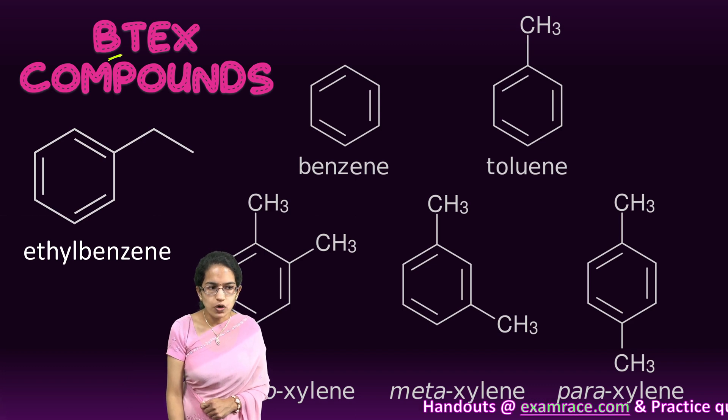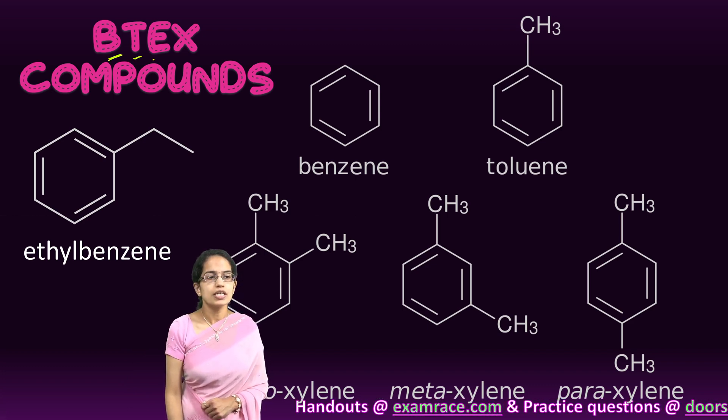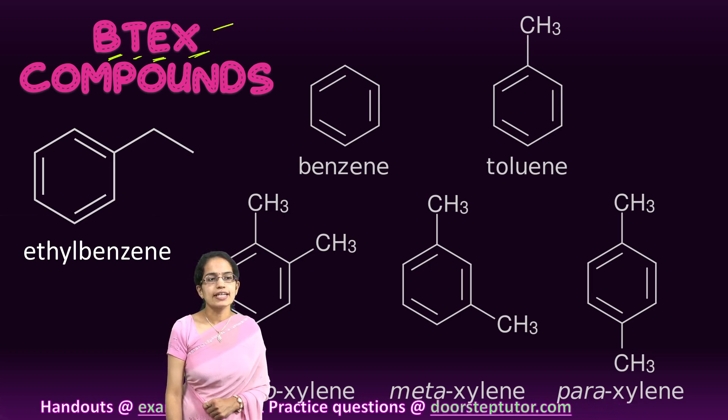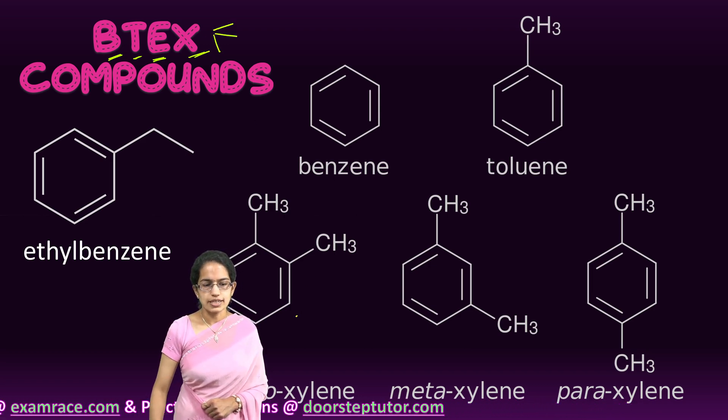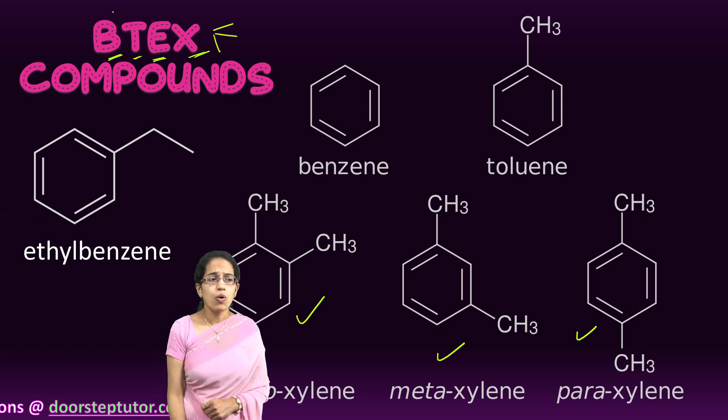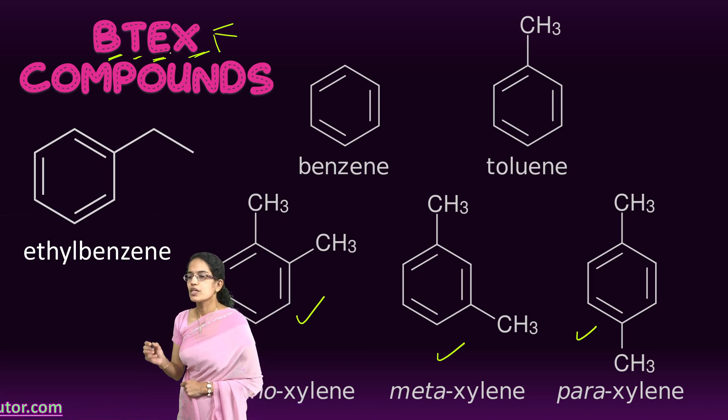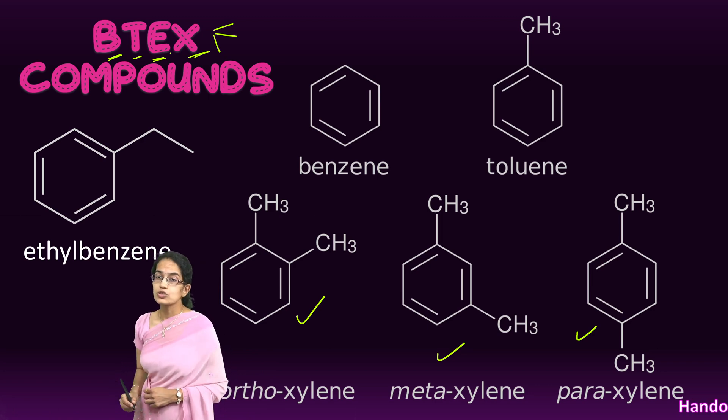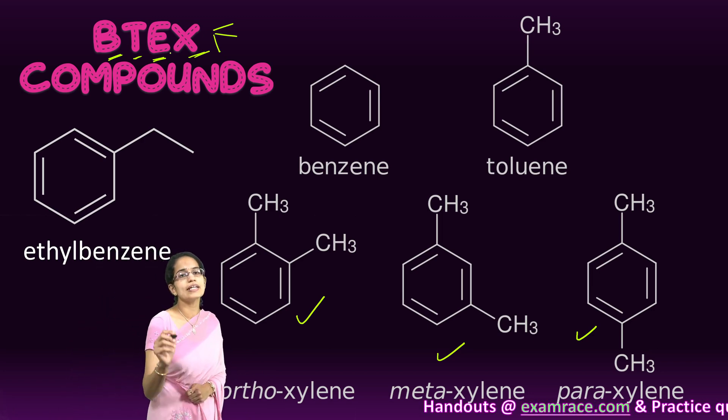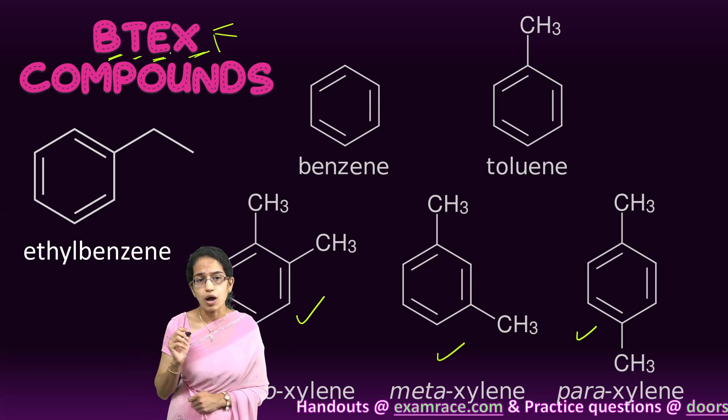BTEX stands for B for benzene, T for toluene, E for ethylbenzene, and X for xylene. Now xylene again occurs in three forms: the ortho, meta, and para xylene forms. Now all of these four compounds together are one of the major sources of air pollution and they are one of the most abundantly found chemicals processed on earth.